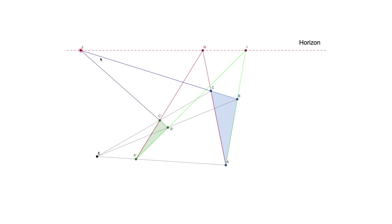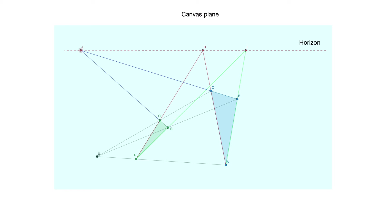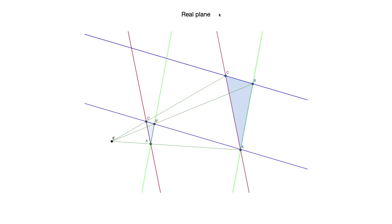What we want to do is take this network of lines and points and put it on the painter's canvas, then see what the corresponding network looks like in the real world. We have the painter's canvas, the painter's eye, and the horizon. Each point on the canvas will be projected onto another point in the real world. So we put our original network in the canvas plane so that the line through H and I coincides with the horizon, and then we look at the projected network in the real plane. We know that the red lines are parallel and the green lines are parallel. If we can prove that the blue lines are also parallel, then we are done.